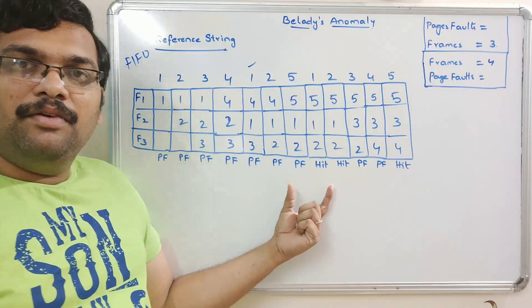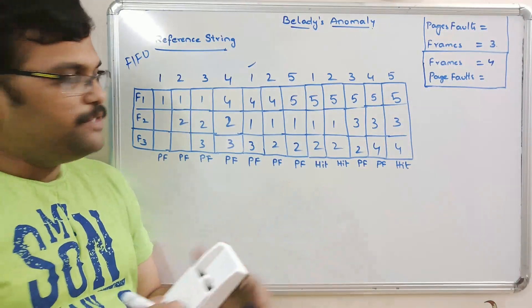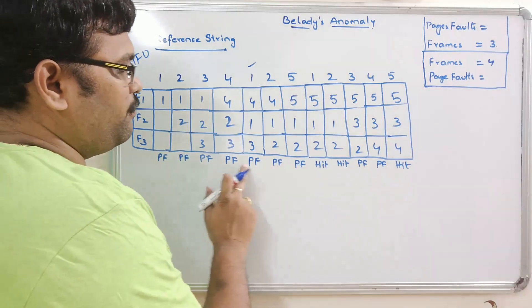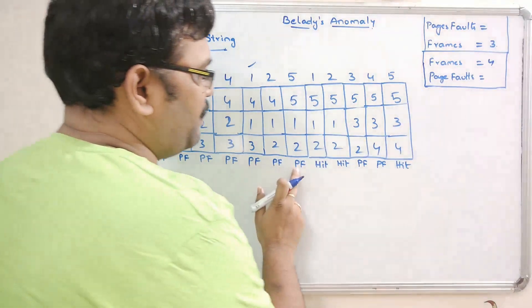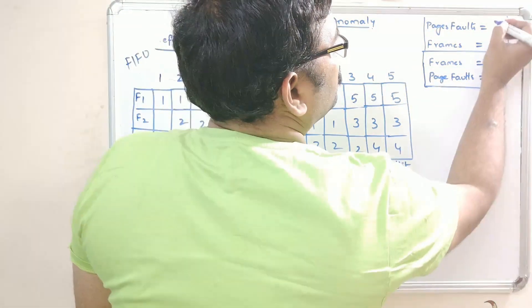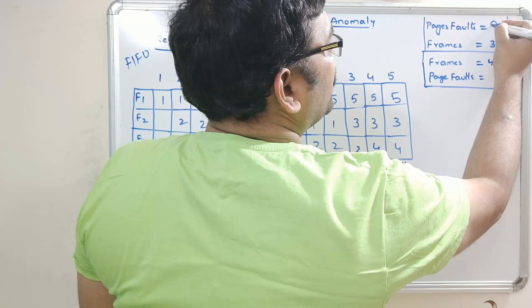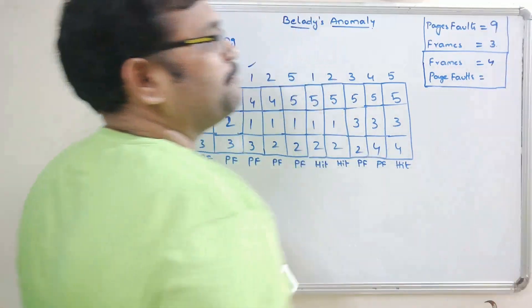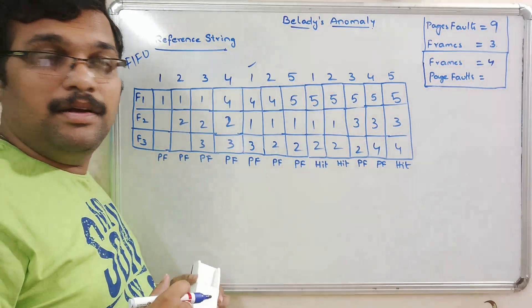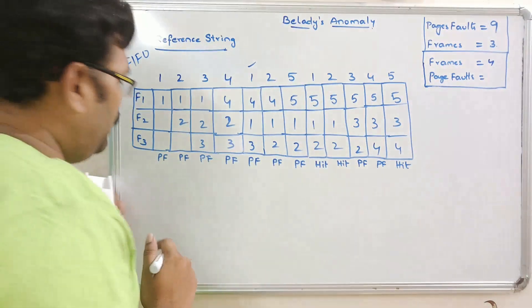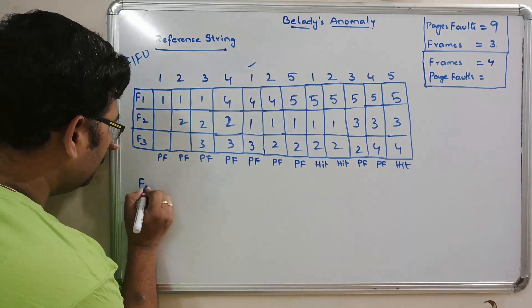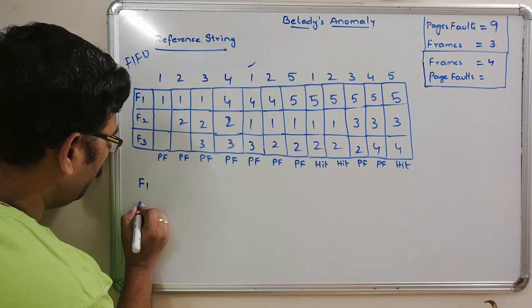After completing this reference string, counting all page faults gives us: 1, 2, 3, 4, 5, 6, 7, 8, 9 — there are 9 page faults with 3 frames. Now we will apply the same reference string with 4 frames.